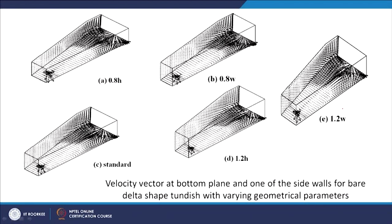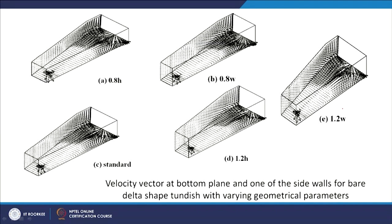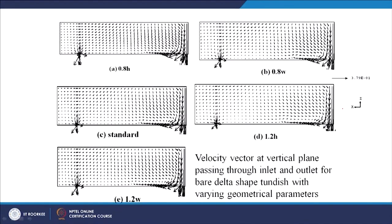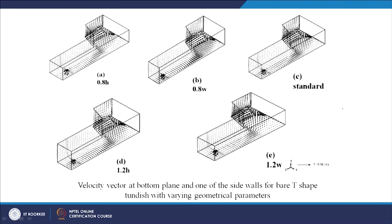Velocity vectors are also shown at the side walls. This analysis was done for the boat shape, delta shape, V-shape, and T-shape — each with different dimensional variations. For the T-shape, the different sizes and the resulting flow velocity vectors at different positions are examined to understand how the geometry change affects the internal flow.